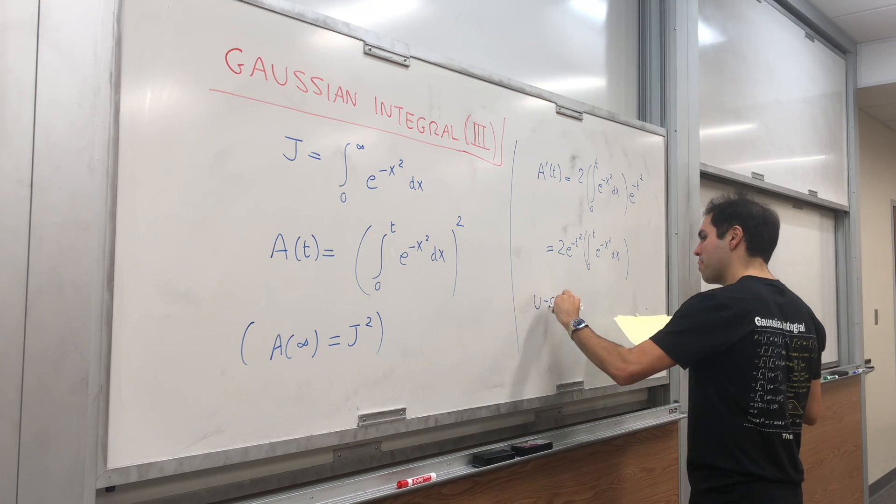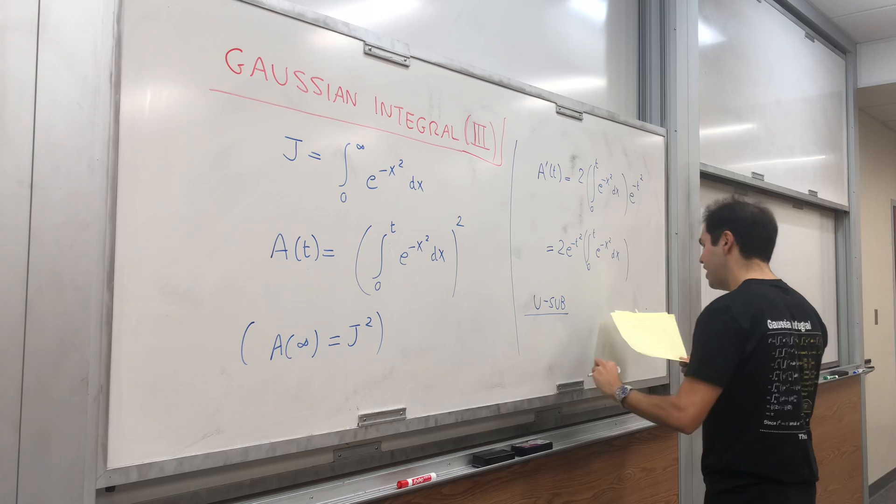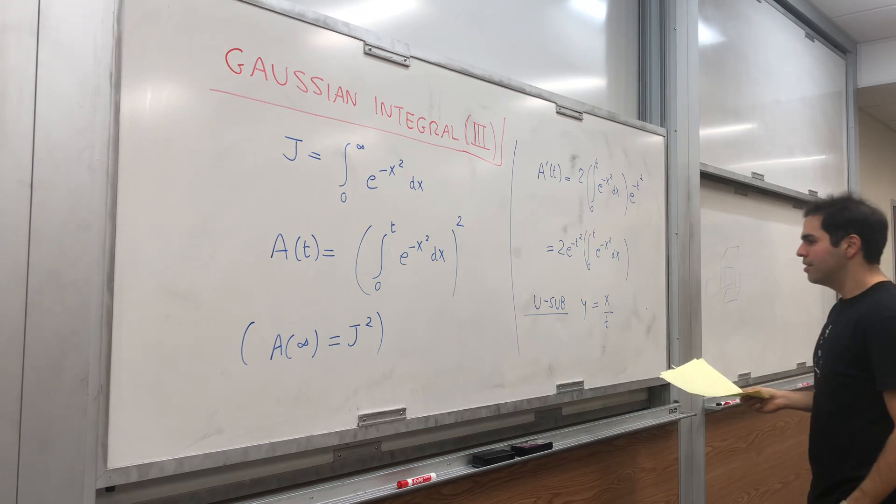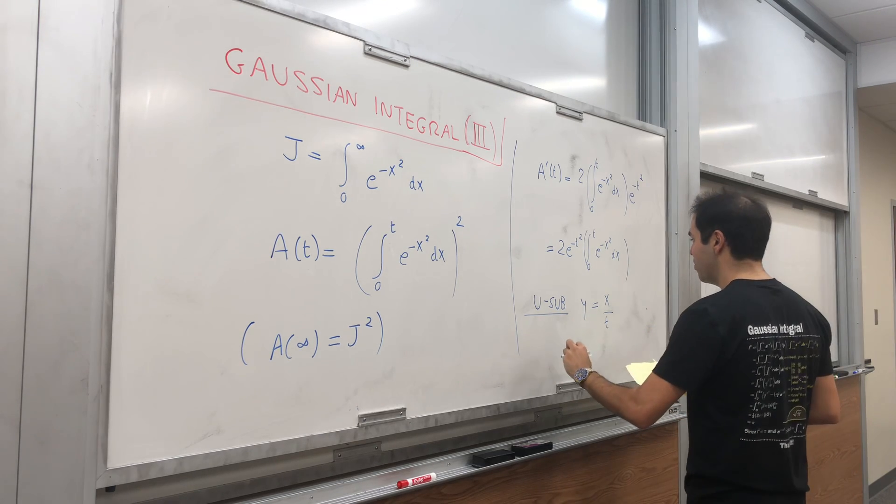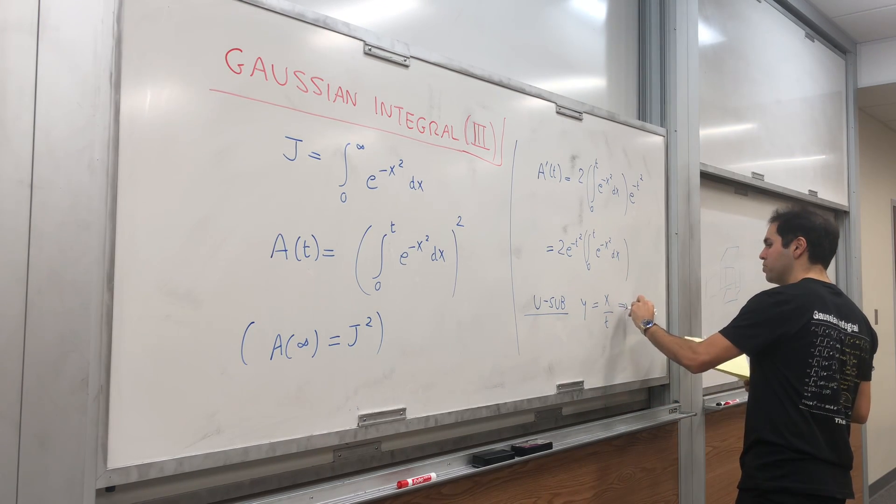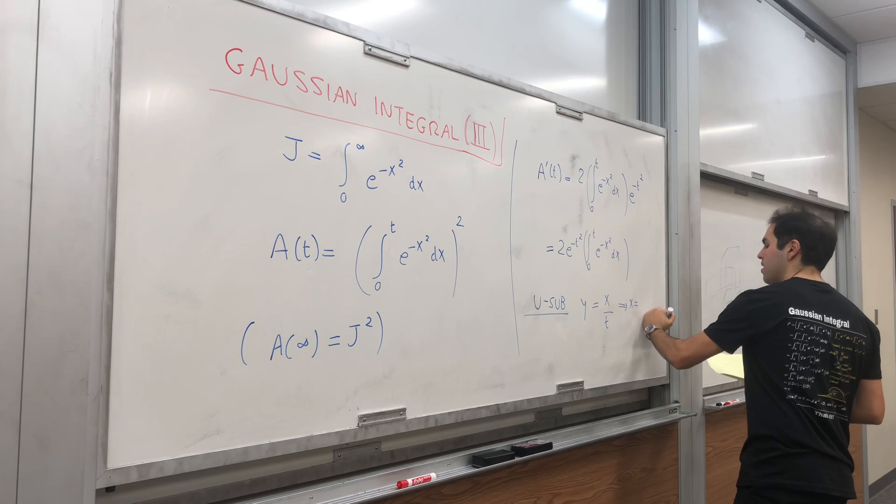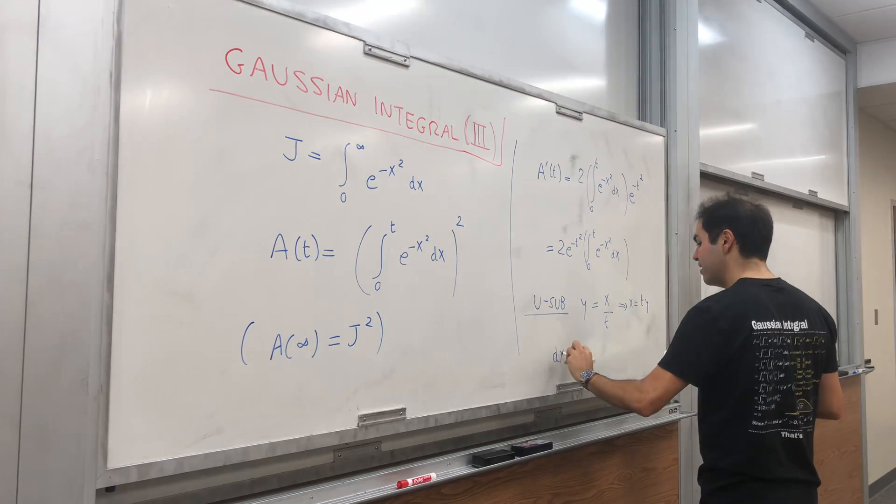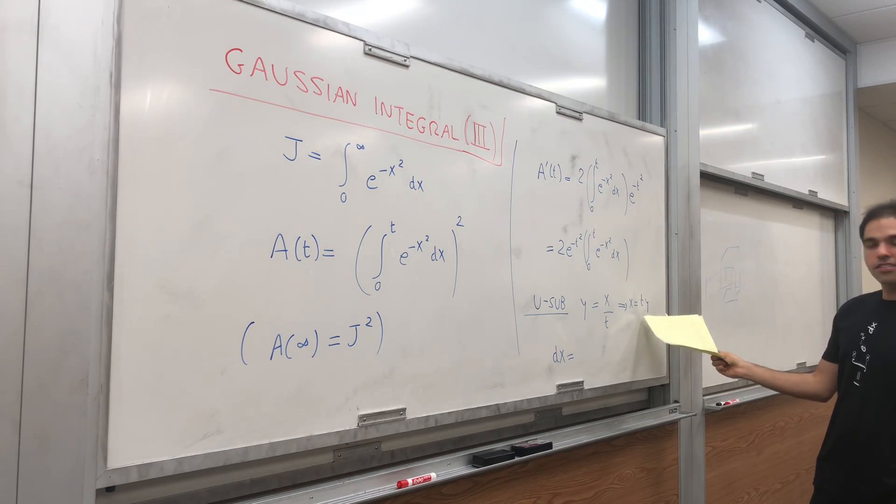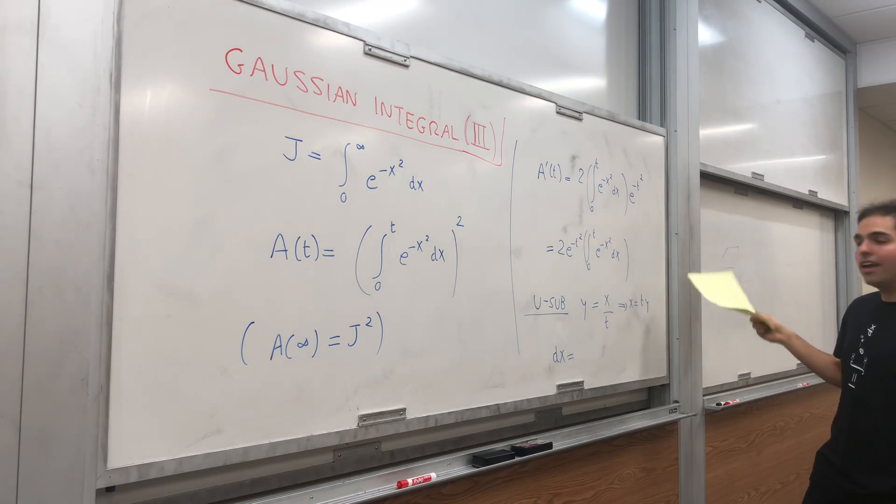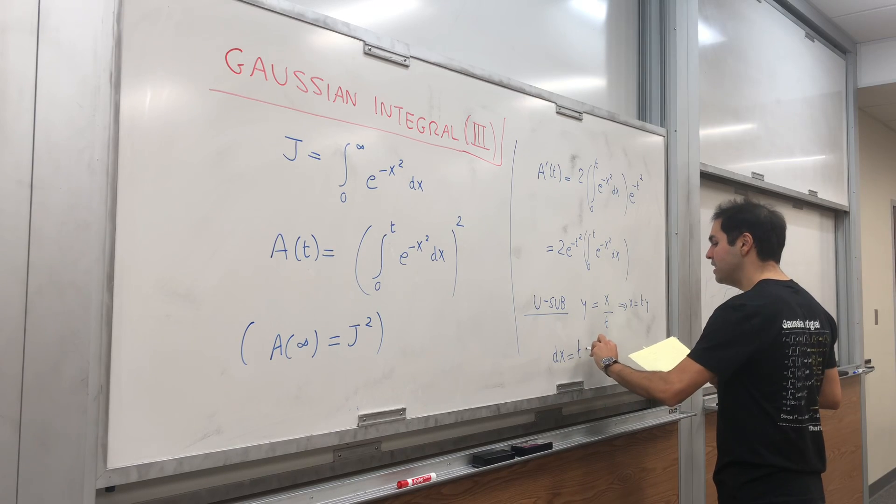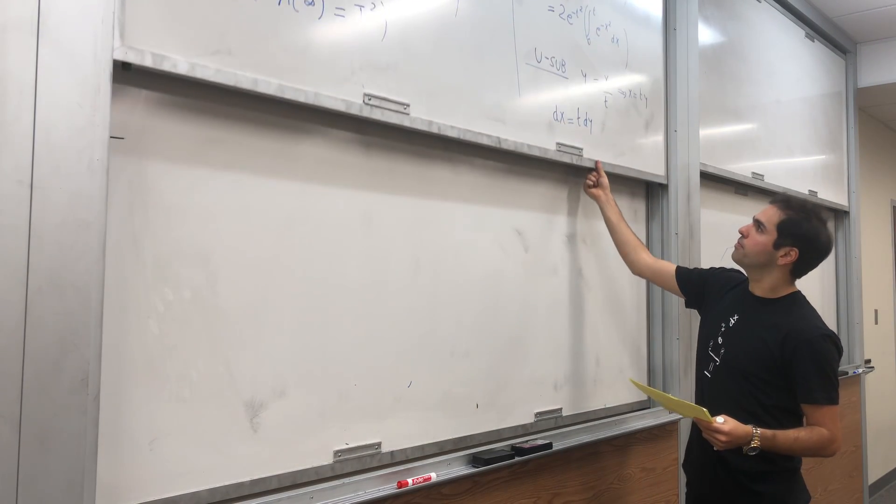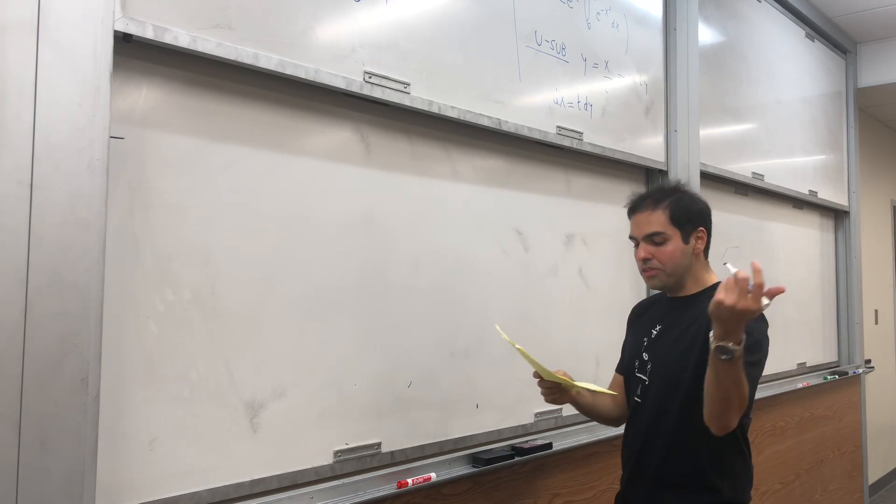So u-sub, namely just let y be x over t. Then what do we get? So in other words x equals to ty. So first of all dx equals to, again t is a constant, so think like 2y, so this becomes t dy.